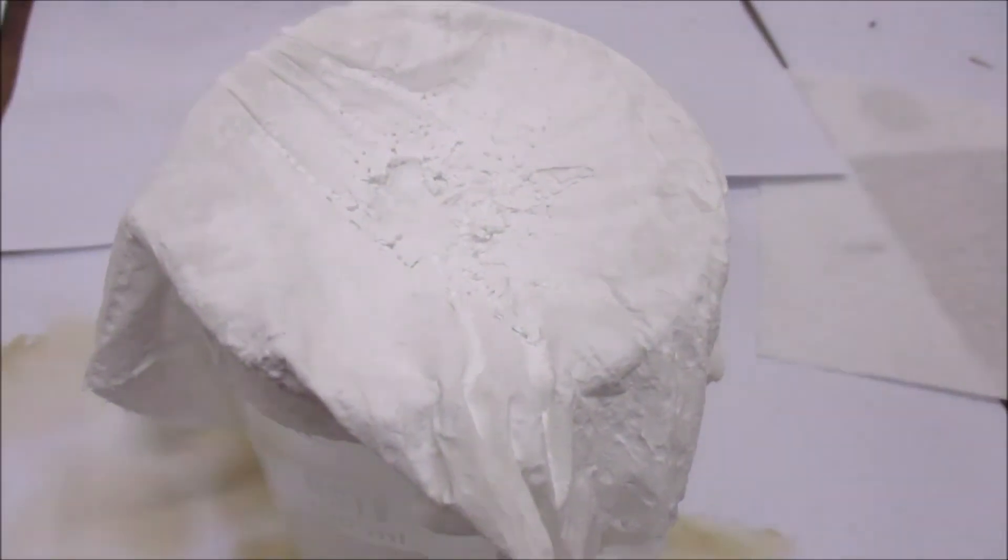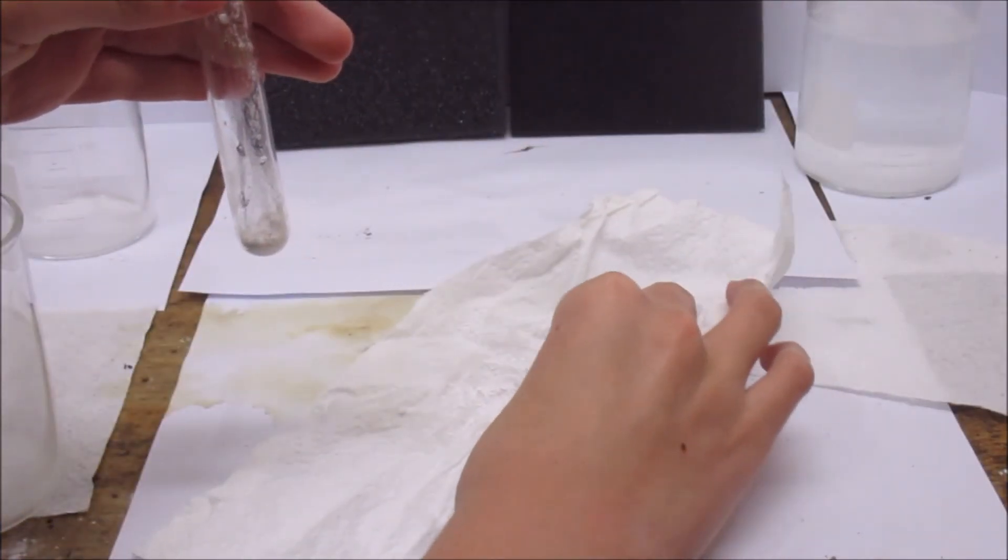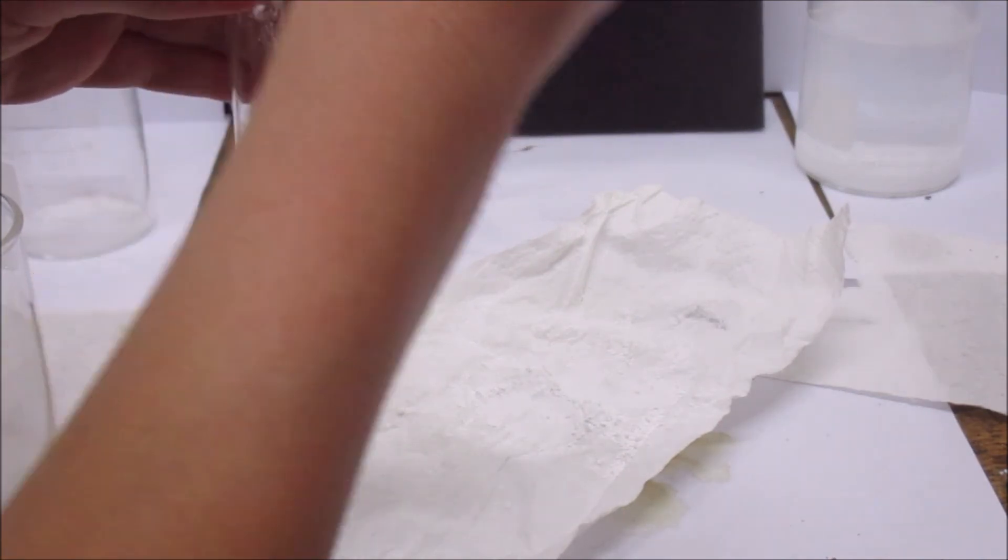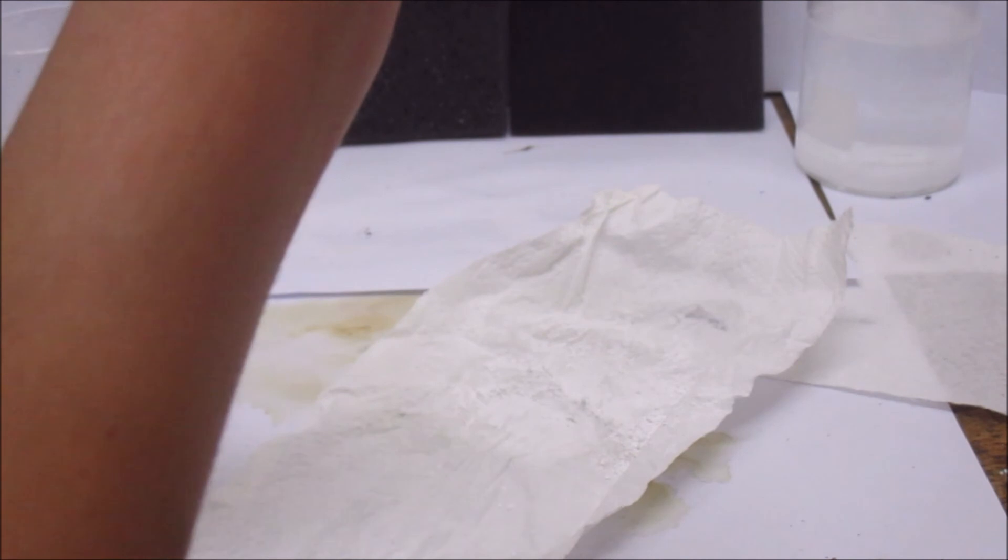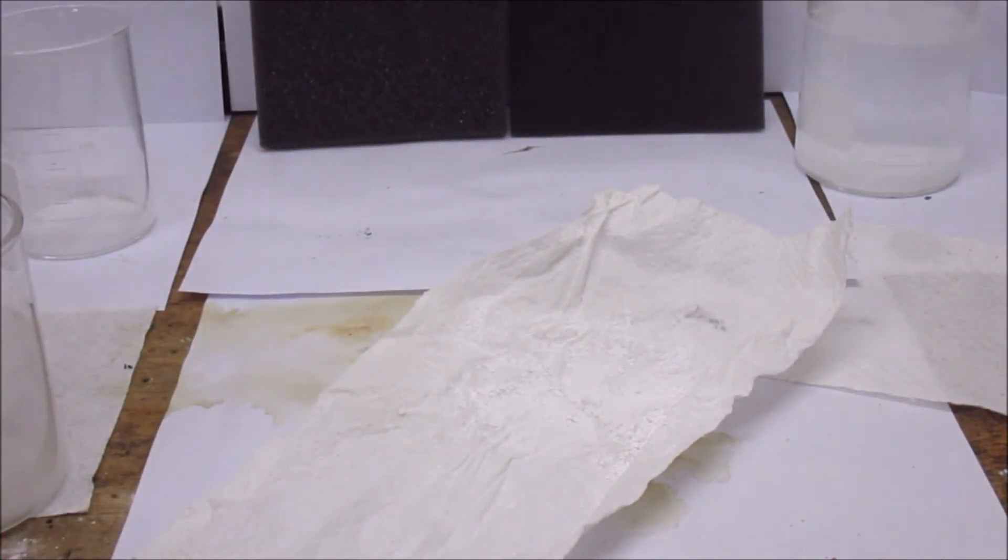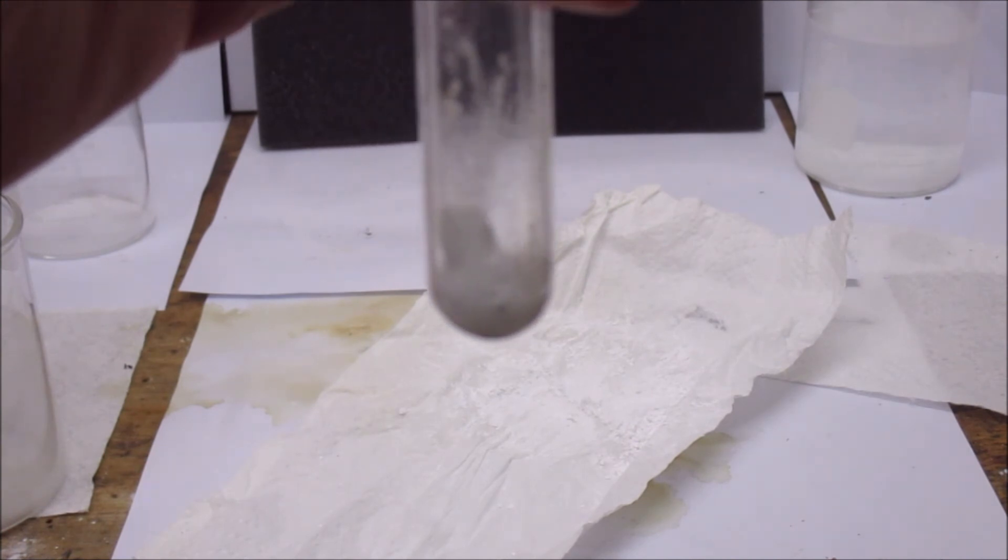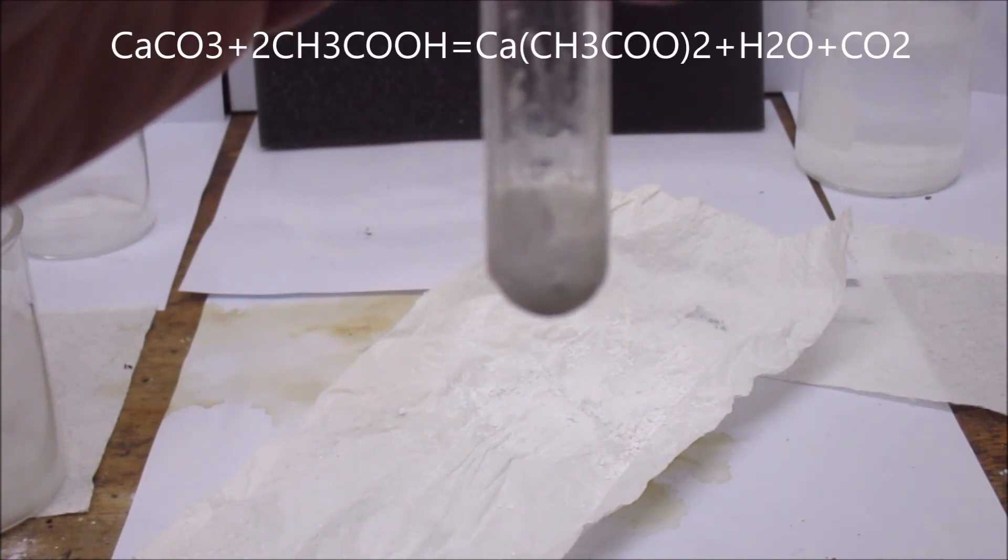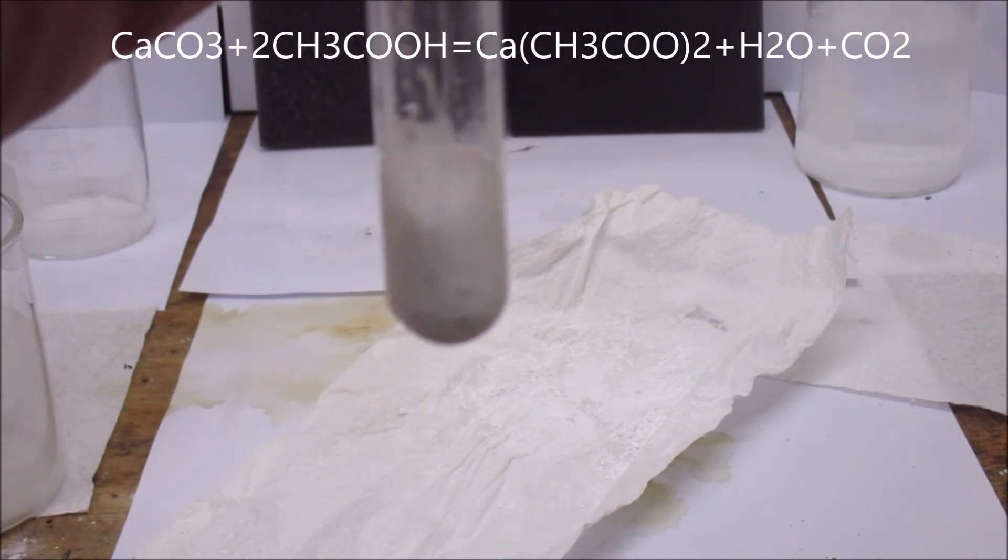I then let it dry and I was left with a nice white powder. I added a little amount of the calcium carbonate to a test tube to make sure it really was calcium carbonate. I then added a little bit of vinegar, and now you can see the bubbles forming from the reaction.